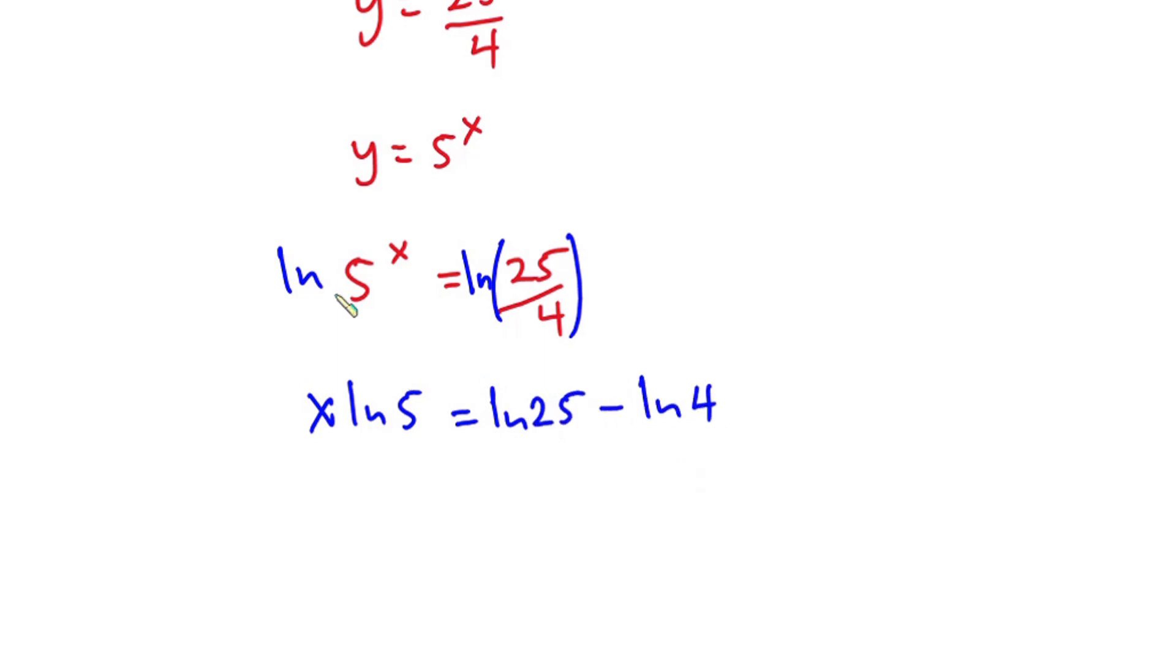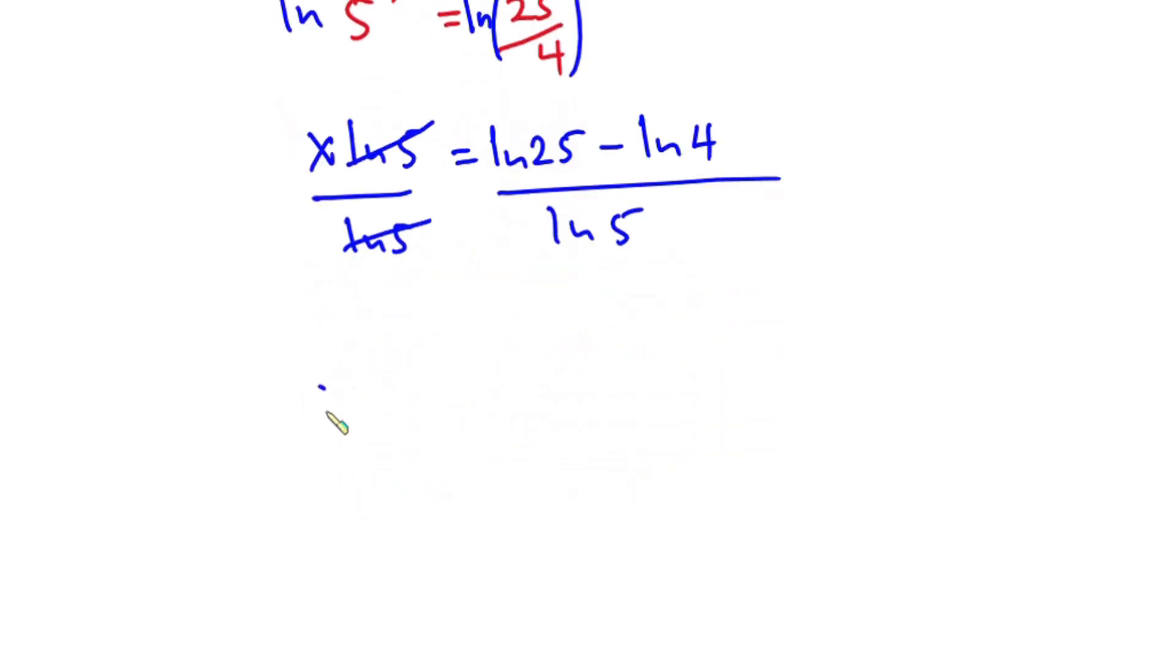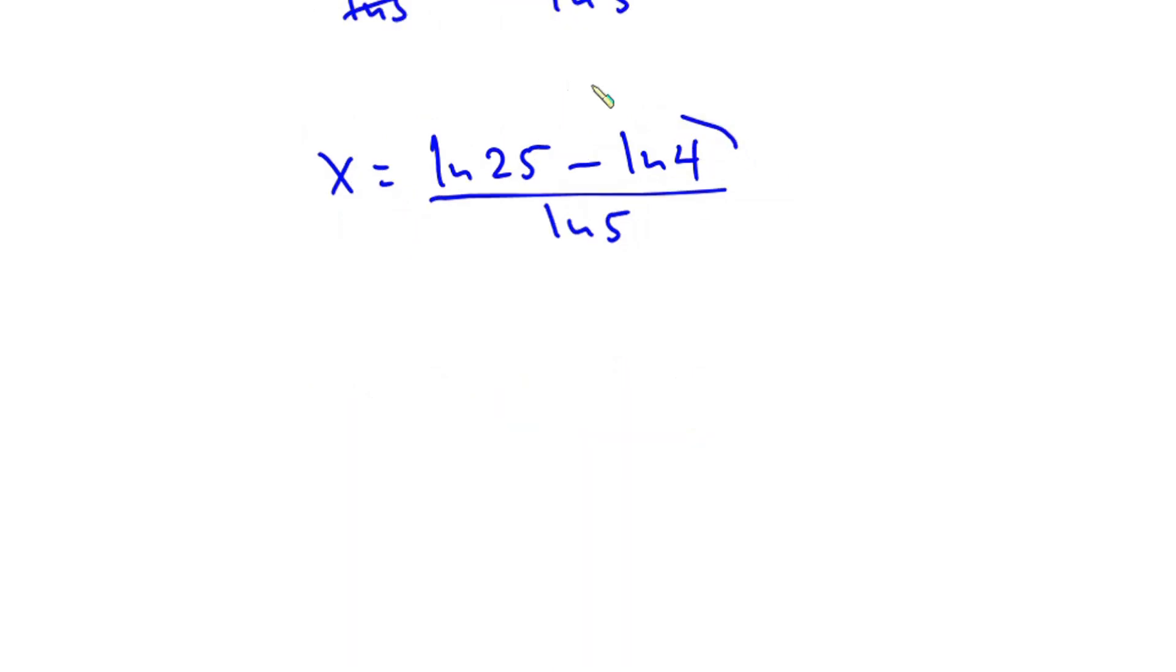Now we're looking for x, so let's divide each side by natural log of 5. This will cancel, and we have x equals natural log of 25 minus natural log of 4 over natural log of 5. If you put this on the calculator, we have x approximately equal to 1.1386, and this is our final answer.